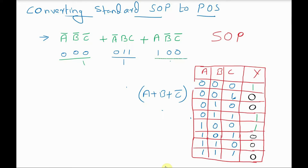This is opposite to SOP. In SOP, for the first case where A is 0, it is written as A̅, B is 0 so B̅, C is 0 so C̅ — all multiplied together. But in POS expression, since this is a product-of-sums, each maxterm is a sum type, so we add all the variables. A is 0 therefore written as A; B is 0 so written as B; C is 1 so written as C̅, giving A + B + C̅.